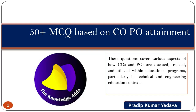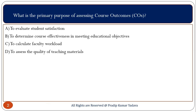So near about 80 questions I am going to discuss here. First question: what is the primary purpose of assessing course outcomes? One thing before starting — I will focus on the correct option only; I will read the question and then the correct answer. The primary purpose of assessing course outcomes is to determine course effectiveness in meeting educational objectives.